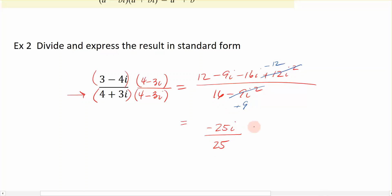And I can simplify this by reducing 25 over 25, which is just simply because the 25s cancel each other out. So, I have negative i. So, the result of this. If I take 3 minus 4i divided by 4 plus 3i, I end up with negative i. And that's how you're going to divide using conjugates.